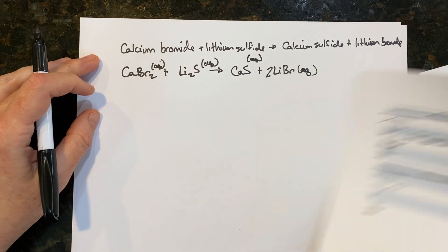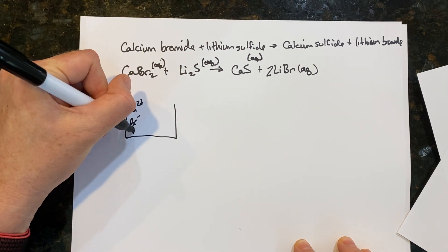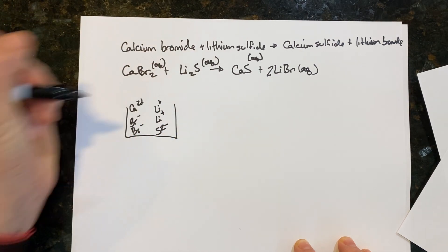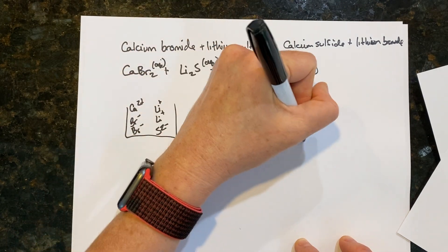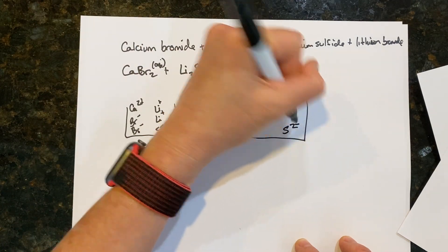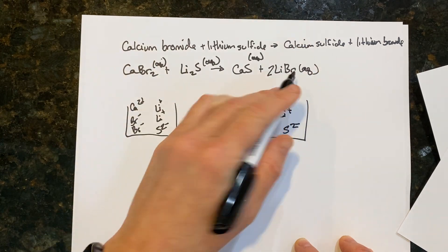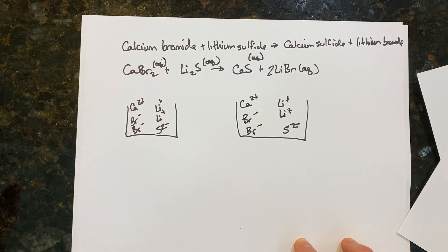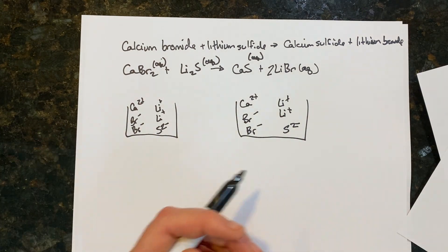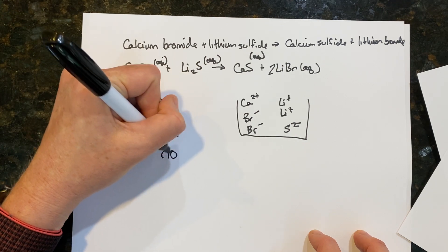Aqueous, aqueous, aqueous, aqueous — nothing came together to form a solid. On the left side you had calcium ions, bromide, lithium, and sulfide all broken apart. On the right side you still had calcium ions, sulfide, lithium, and bromide all broken apart. Both sides look exactly the same — nothing was formed, nothing happened. Therefore, is there a reaction? The answer is no.